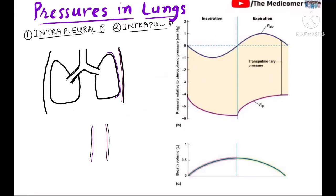Hello friends, in this section we will discuss different pressures in lungs. This is a very basic topic of respiratory physiology. There are three main pressures to discuss: one is called the intrapleural pressure, another is the intrapulmonary pressure or the intraalveolar pressure, and the third is the difference of these two. Intrapleural pressure is denoted as PIP and intrapulmonary or intraalveolar pressure is denoted as P-alv.